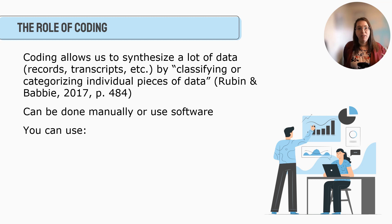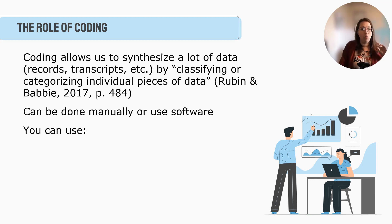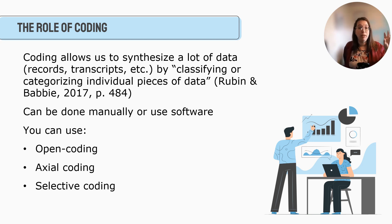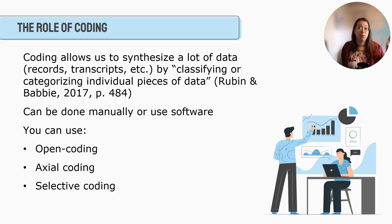You can use things like Word, or really useful software like InVivo or Zotero that can help with this process. There is a process to coding. The idea is there's open coding, where you go in with no preconceived notions and start looking at themes. Then we do axial coding, where we look at how the codes affect each other. And then selective coding, where we find one large central theme across the different axes created during axial coding. There's a good video in this module that gives more detail about that process.